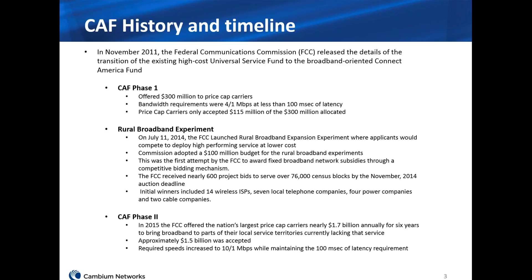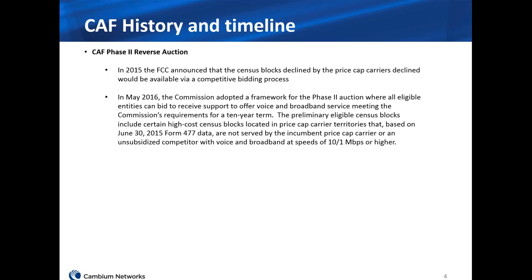It's important to note that with CAF Phase II, starting with the Rural Broadband Experiment, required speeds were 10 Mbps down, 1 Mbps up, and the 100-millisecond latency requirement stayed in place. There's a lot of talk about 25-3 and they'll eventually move to that. The annual budget was originally slated at $175 million, which is $1.75 billion over the 10-year award period. That amount has since gone up.